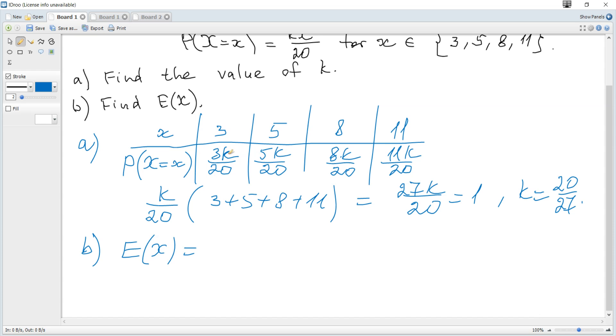k is found. And you can see that k over 20 is a common factor and we can factor it out. And k is 20 over 27. So it becomes 20 over 27 divided by 20, which is just 1 over 27.